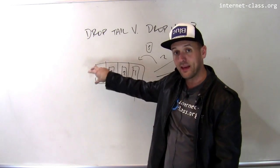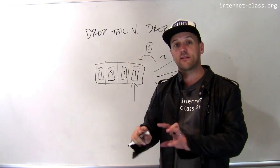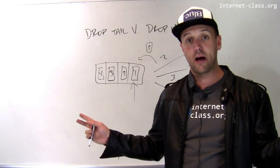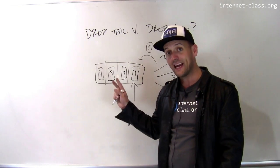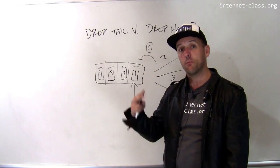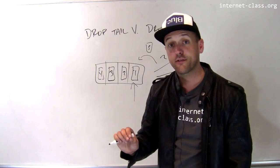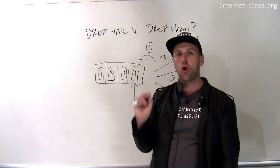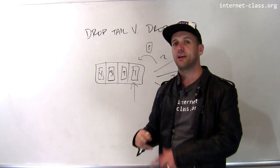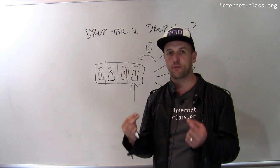So to review, if I drop from the tail, then it takes the signal that I'm overloaded longer to propagate to the people that are overloading me, and they slow down more slowly, and more packets are dropped. If I drop from the head of the queue, that signal gets there quicker, they slow down faster, and the total number of packets that are dropped and potentially need to be retransmitted is smaller.